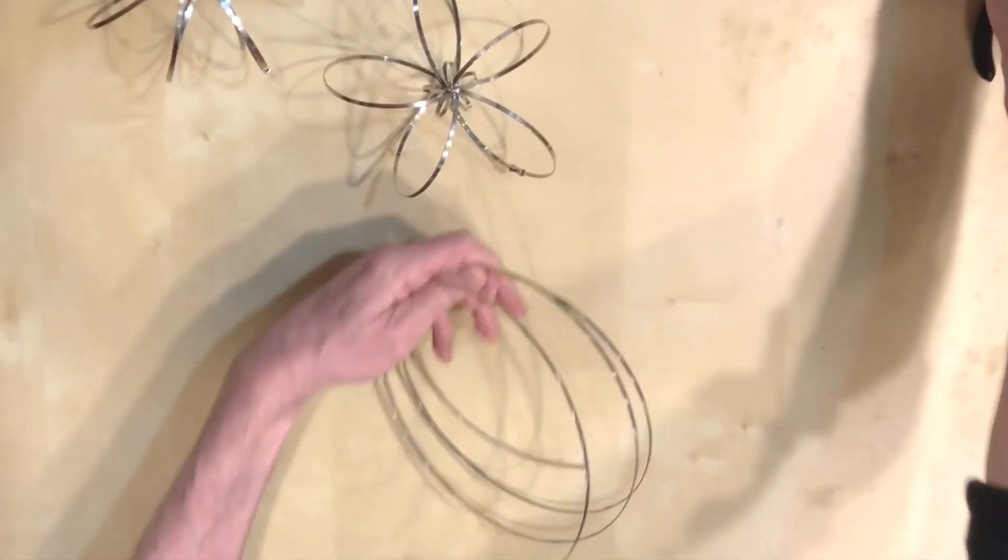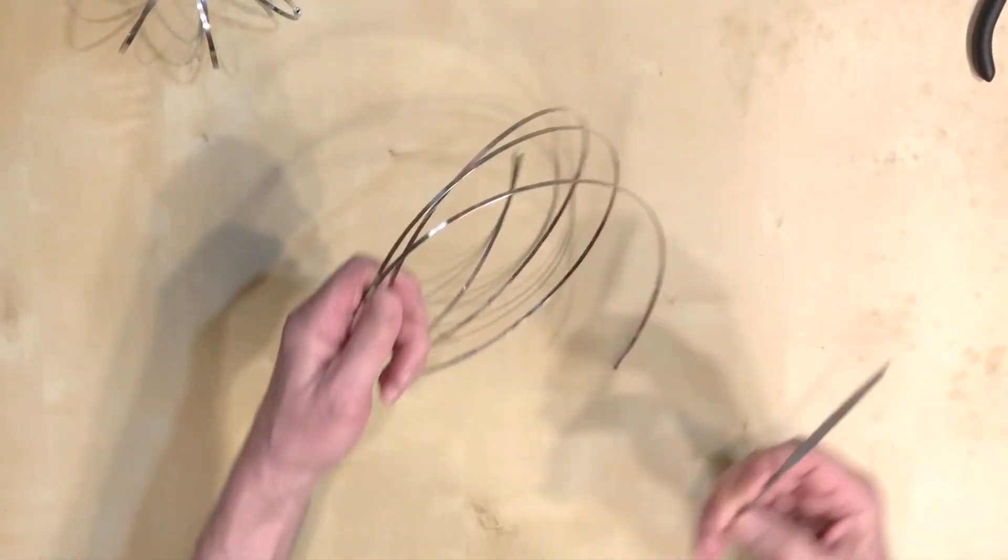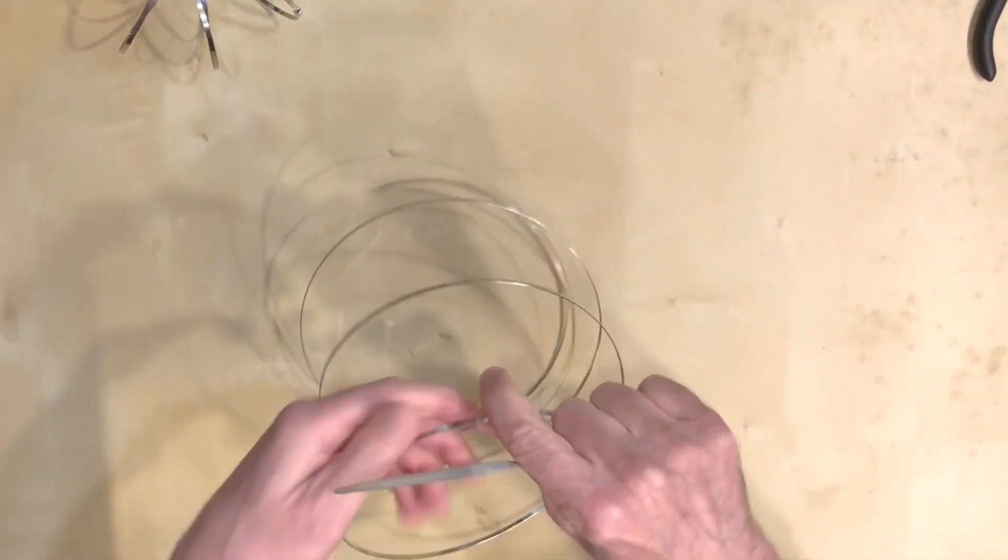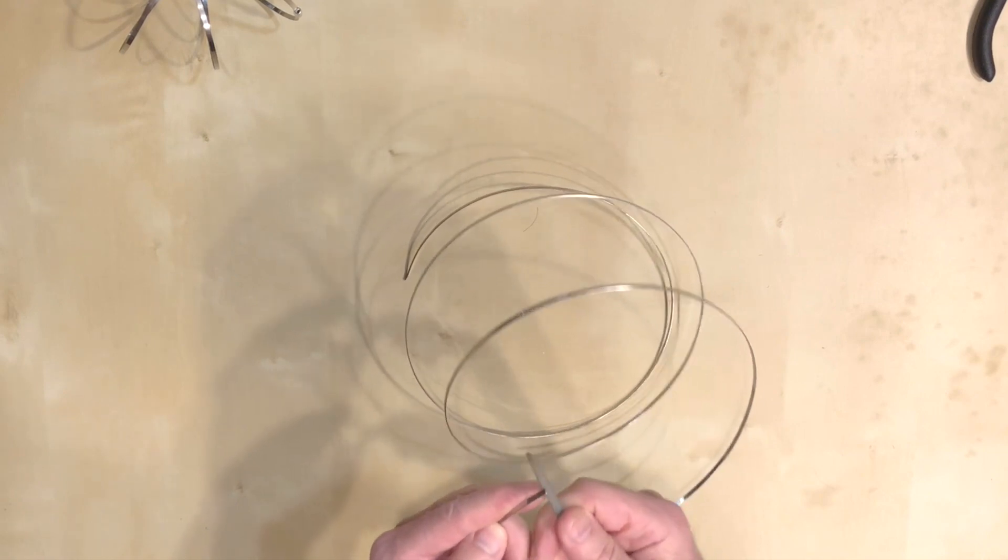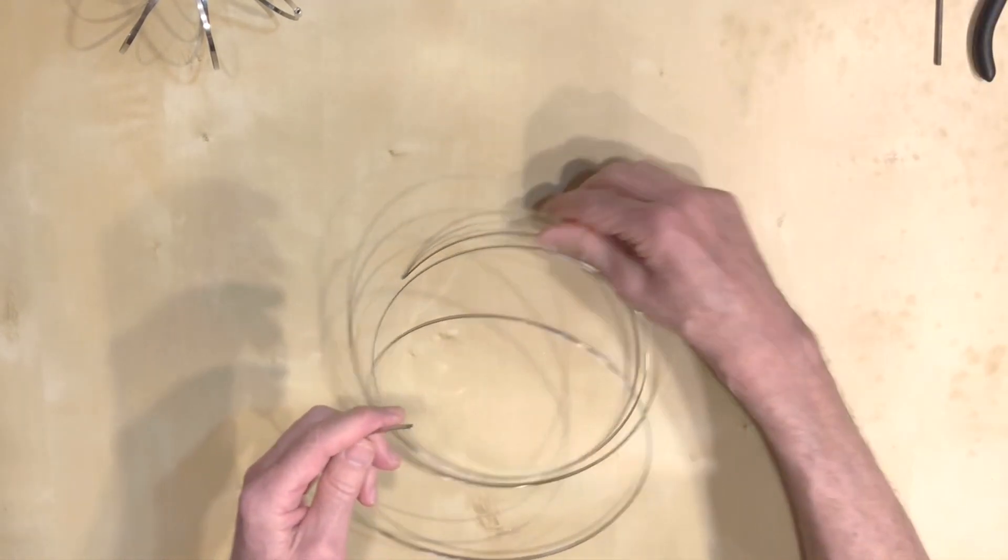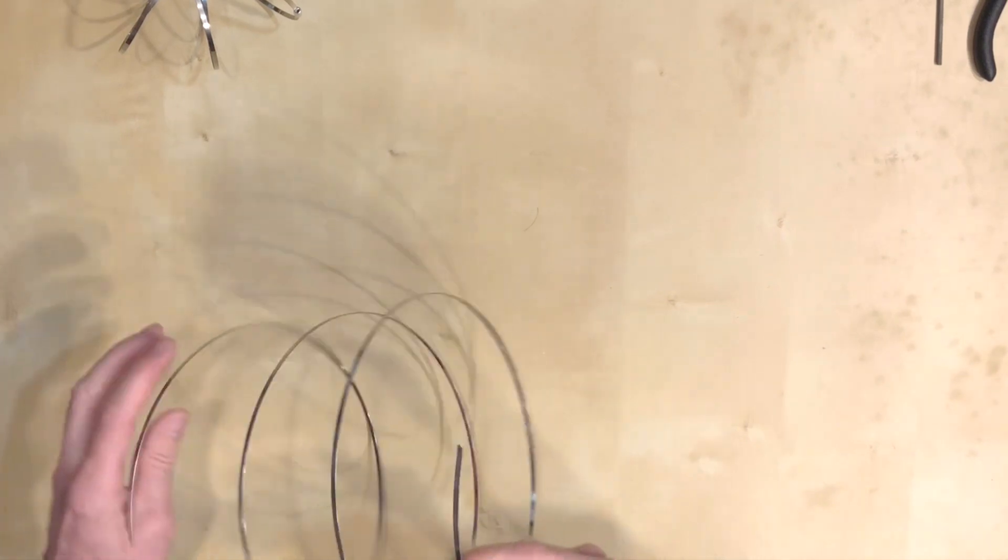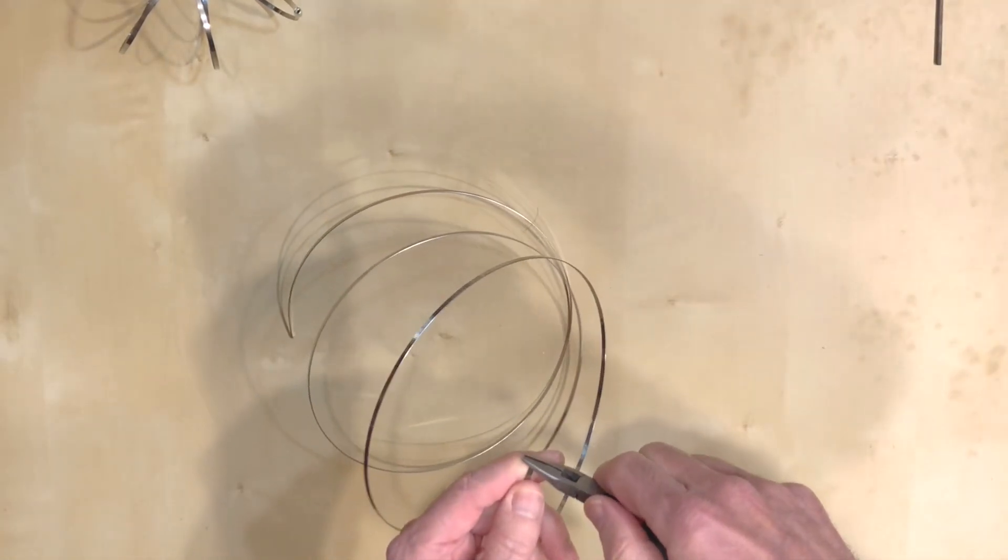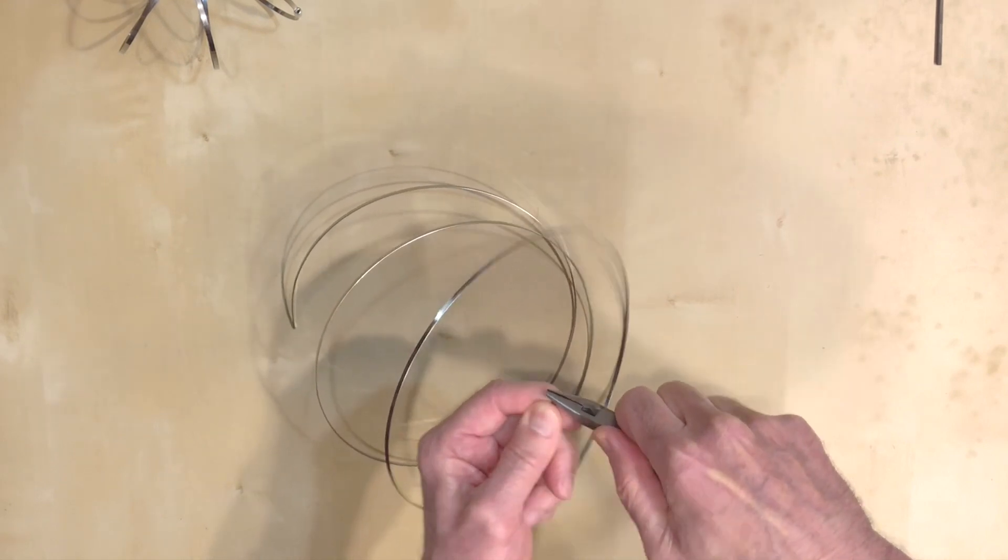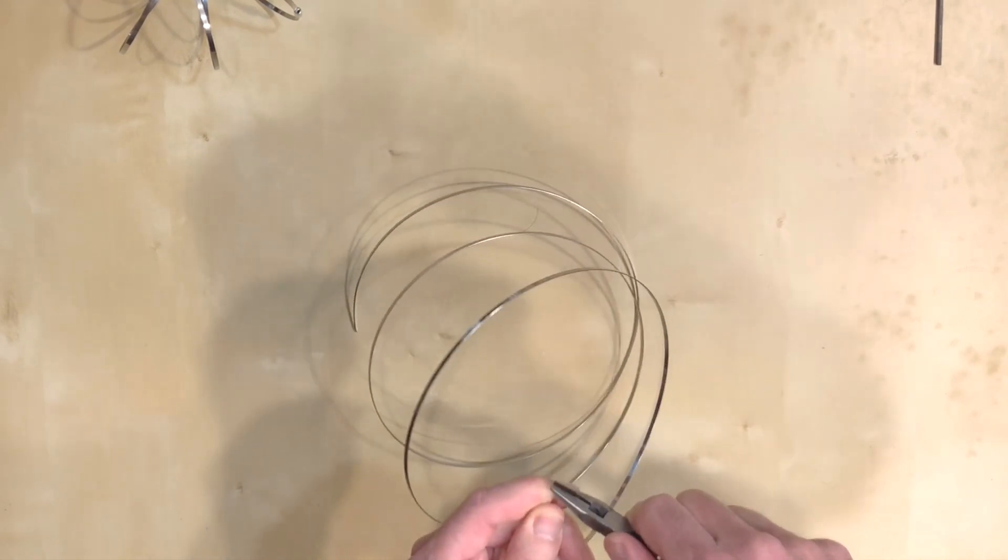After cutting it, I rounded the ends a little bit so I won't cut myself. I did that before, and also what I did before was to slightly bend one of the ends of the wire, getting ready to join the wire together.